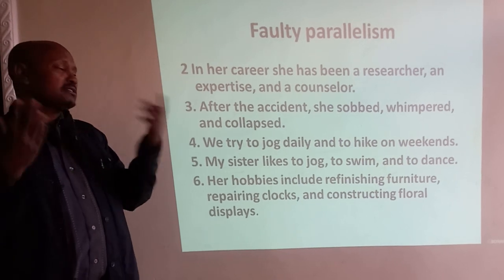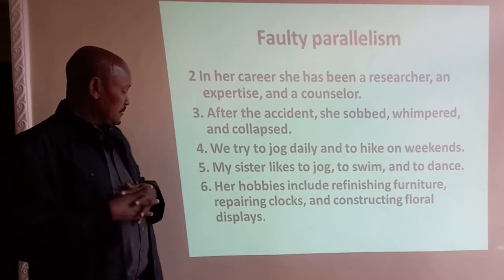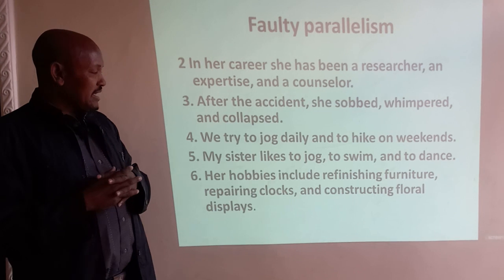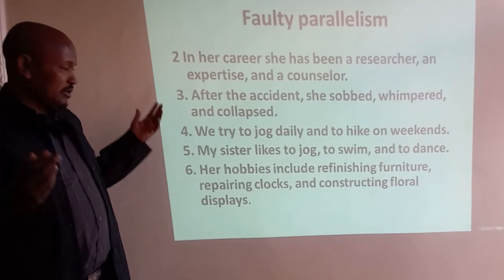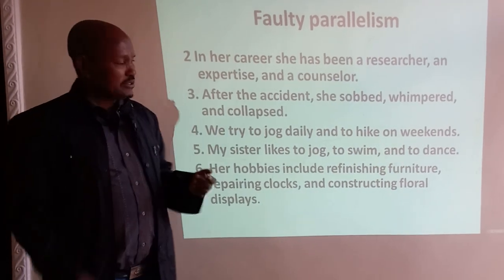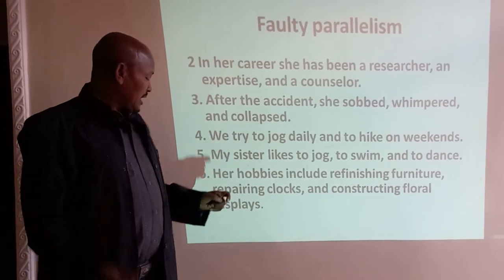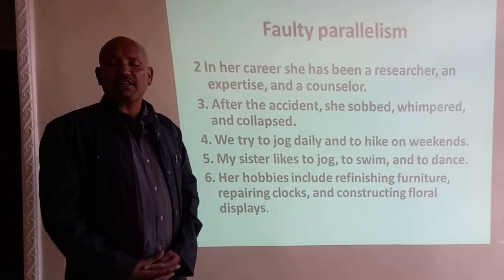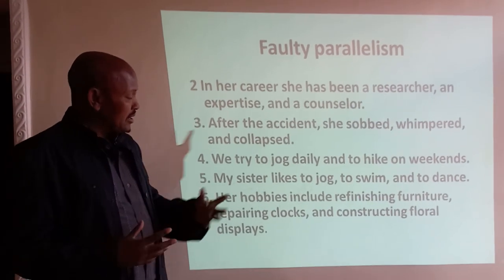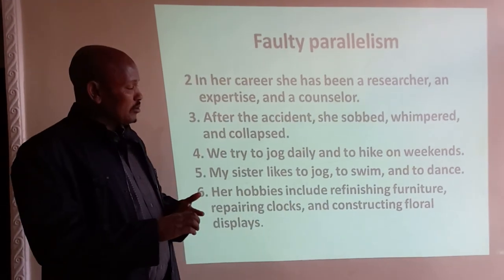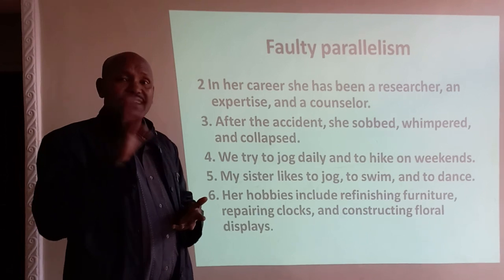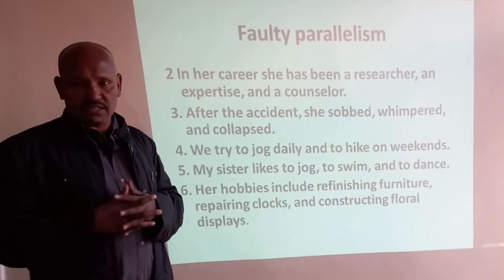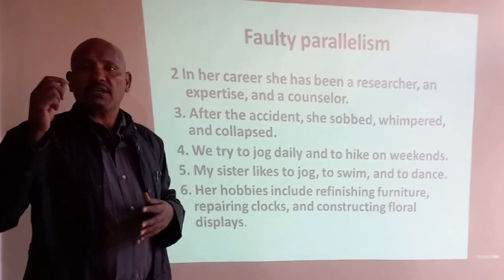Sixth example: 'Her hobbies include refinishing furniture, repairing clocks, and constructing floral displays.' These three phrases describe her hobbies. 'Refinishing,' 'repairing,' and 'constructing' are all gerund forms — they are parallel. To identify parallelism, simply find the conjunction between the parts, identify the form each part takes, and then determine how to create equal ideas. That is the strategy.